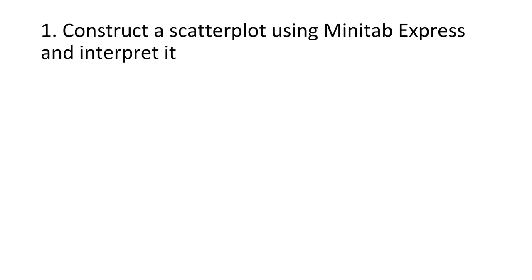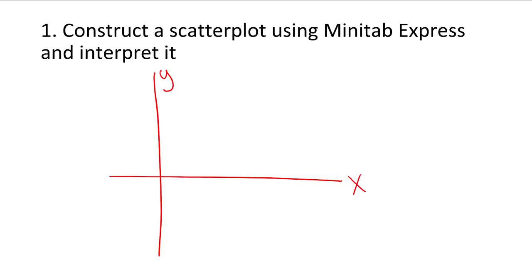The first learning objective is to construct a scatterplot using Minitab Express and interpret it. Scatterplots are used to display data from two quantitative variables. We have two axes: the horizontal x-axis and the vertical y-axis. If you're using one variable to predict the other, then the explanatory variable would be on the x-axis, and the response variable would be on the y-axis. I'll take you to Minitab Express now to review how to make a scatterplot.